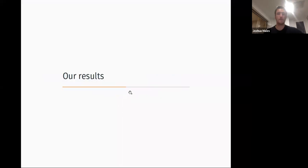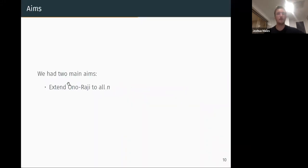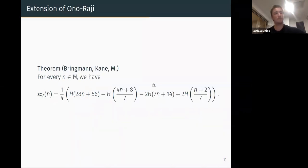So what did we show? Like I said we had two main aims. First, extend Ono-Raji to all n, so it doesn't have to be positive odd, it doesn't have to be not 5 mod 7. And also I want to provide some explanation for this curious identity. The first one, Ono would say, was proved with combinatorial structures and there's a lot of structure behind that. Ono-Raji was only proved using generating functions and modular forms, so we want some more explanation for this identity.